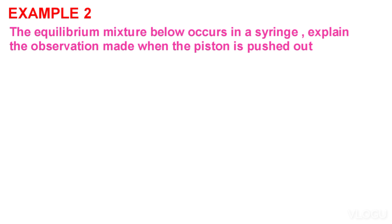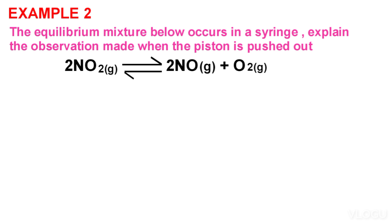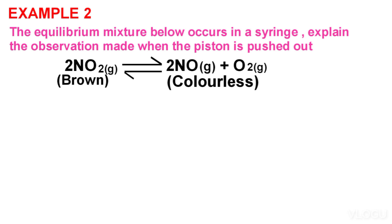Example 2: The equilibrium mixture below occurs in a syringe. Explain the observation made when the piston is pushed out. Note: where the forward reaction is favoured, the observation is that the brown colour of gas fades, or the brown colour changes to colourless. Where the backward reaction is favoured, the observation is that the brown colour of gas intensifies, or colourless changes to brown.